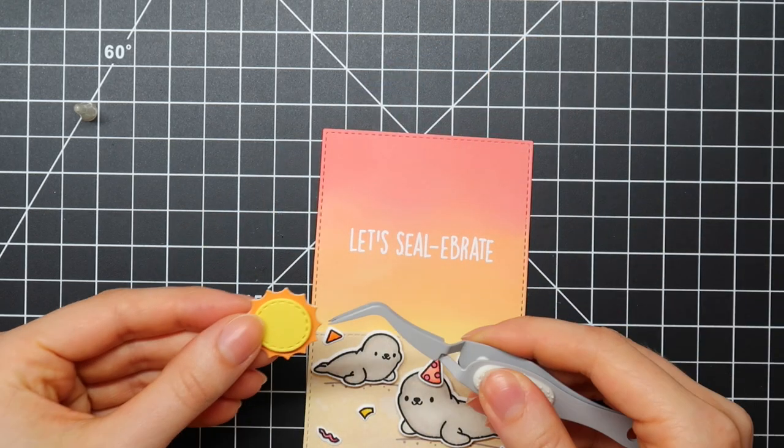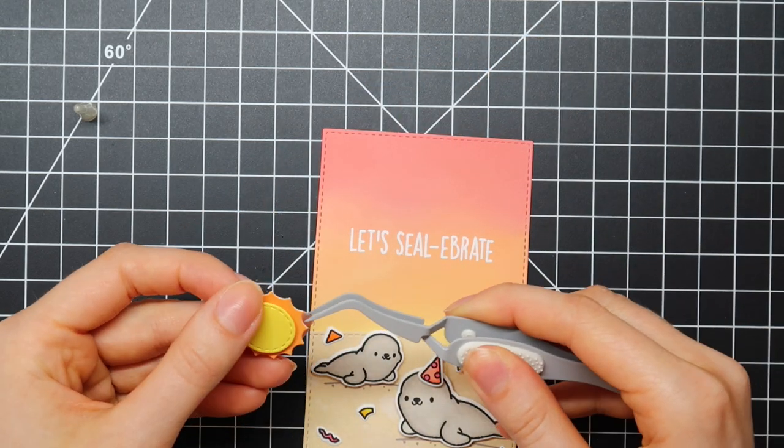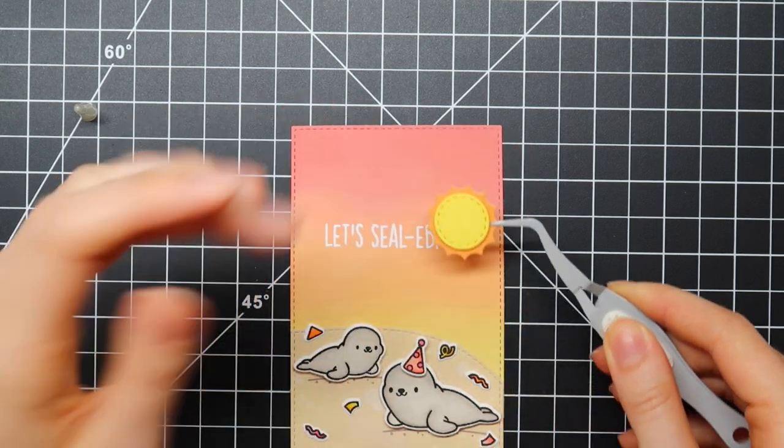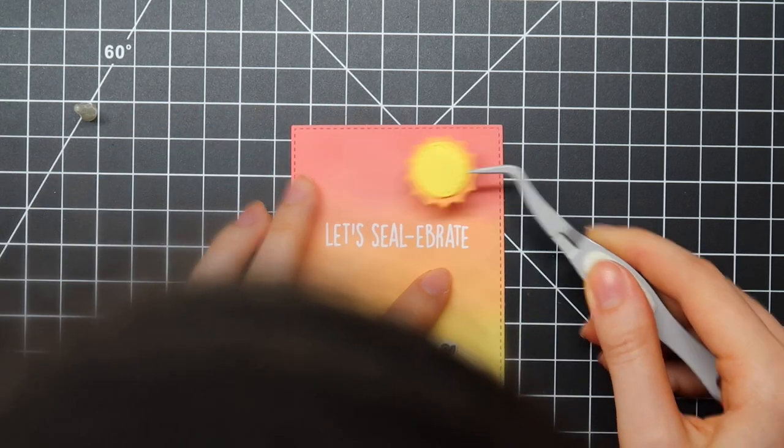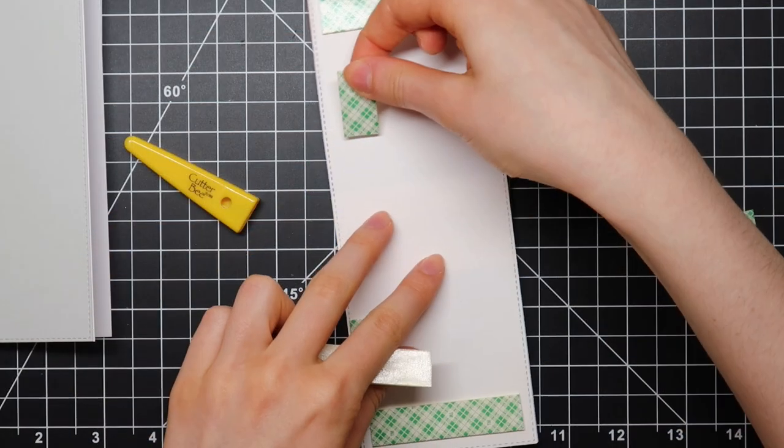I also die cut a little sun using the Sun, Moon and Stars die cut set from Heffy Doodle and I'm assembling that using foam tape and then I can position it using my tweezers.